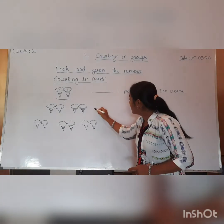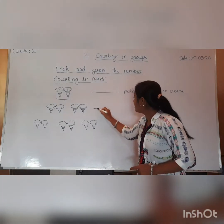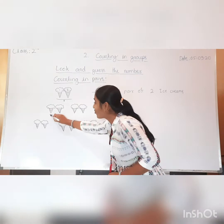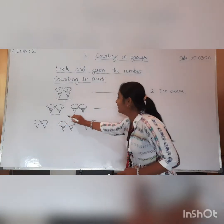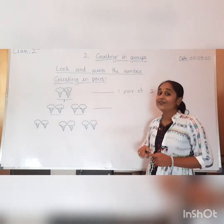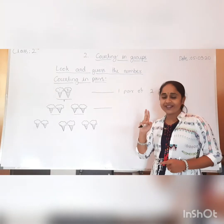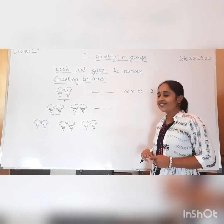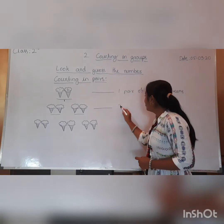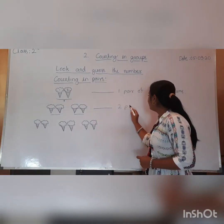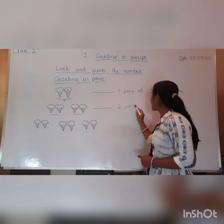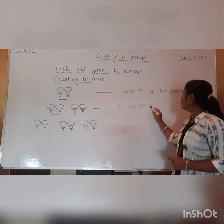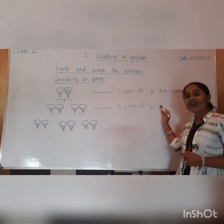In the second row, how many pairs are there? In the second row, one, two — we have two pairs. Two pairs of how many ice creams? Two pairs of four ice creams.